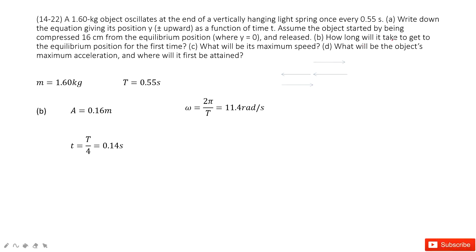The next part asks how long it takes to first reach the balanced position. Initially the object is at the compressed end, and we want it at the balanced position. That distance is just one quarter of the period, so the time is T over 4, which gives 0.14 seconds.